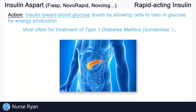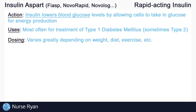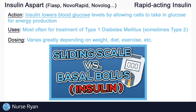The most common use for insulin is for patients with diabetes, often for type 1 diabetics, but sometimes for type 2 as well. Dosing varies greatly between patients based on weight, diet, exercise, and more. Keep in mind that there are two main types of different insulin orders: basal bolus orders and sliding scale orders.